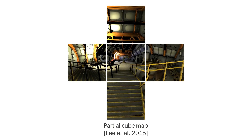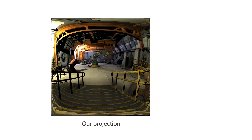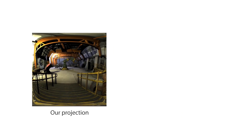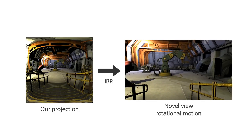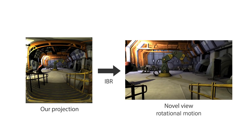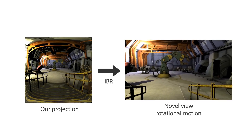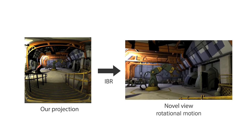CubeMaps don't have this problem, but they are slow to render and require more storage. We present a new non-linear wide-angle projection that can be directly rendered into. It distributes resolution exactly where it is needed — most in the center and gradually less in the periphery.